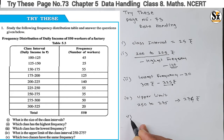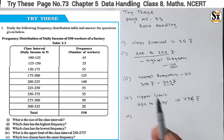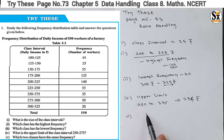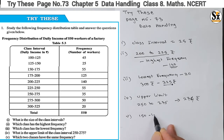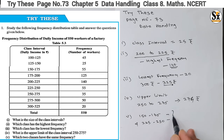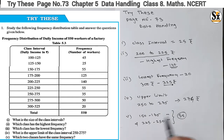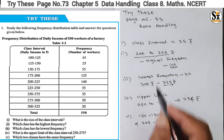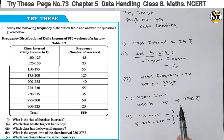The last question: which two classes have the same frequency? Observing the frequency chart, the class interval of 150 to 175 and 225 to 250 have the same frequency of 55 workers. In both class intervals, 55 workers lie. So these are the answers for the first frequency table.